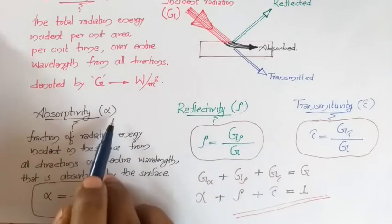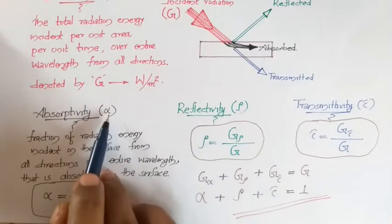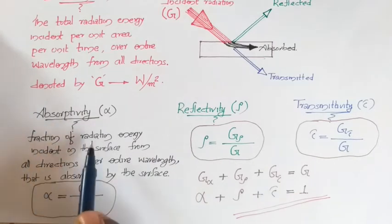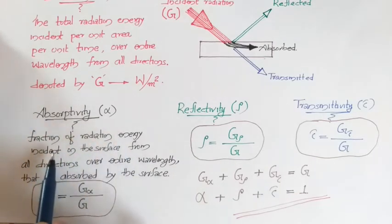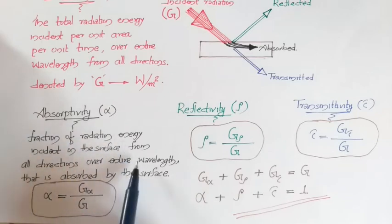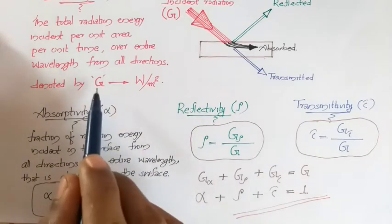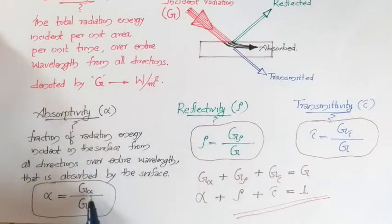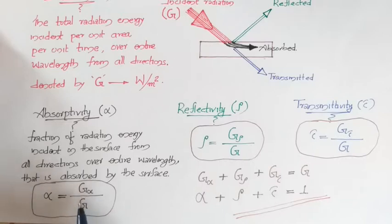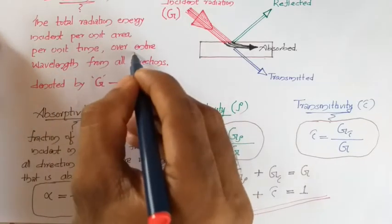Absorptivity is given by the symbol alpha, defined as the fraction of total irradiation — that is, the fraction of radiation energy incident on the surface from all directions over the entire wavelength — that is absorbed by the surface. If capital G is the total irradiation and G_alpha is the amount of energy absorbed, then absorptivity is the ratio of total energy absorbed to total energy incident, measured over the entire wavelength spectrum from all directions.